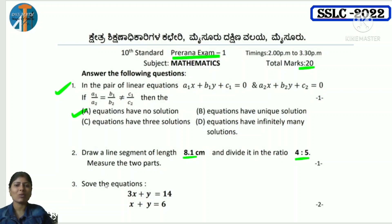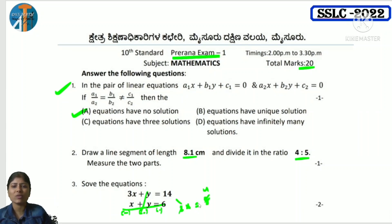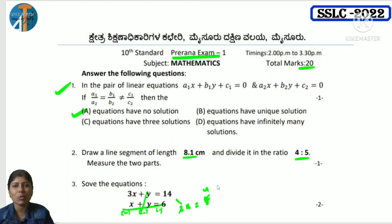Third question: solve the equation — find x and y. No specific method is mentioned, so look directly. Y coefficients are the same and both have a plus sign, so we go for subtracting. Plus y minus y cancels. 3x minus x = 2x, 14 minus 6 = 8, so x = 4. Substitute x into the first equation to get y.